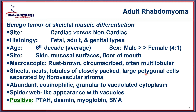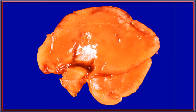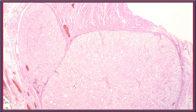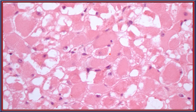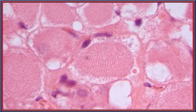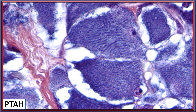Rhabdomyoma is positive with a variety of muscle markers. In the tongue, lobules of neoplastic cells are visible amid skeletal muscle. The vacuoles in the cytoplasm create a retraction artifact, giving a spiderweb-type appearance that is very well developed on high power. Cross-striations are usually easily identified as small linear appearances within the cytoplasm, and can be highlighted with the phosphotungstic acid hematoxylin stain.